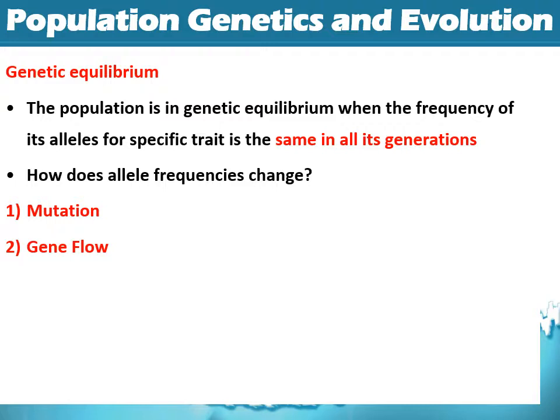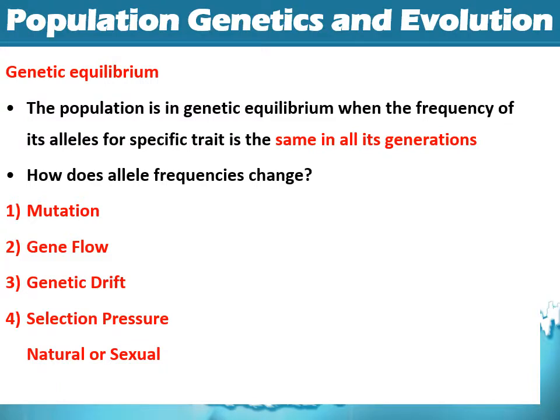The main causes of allele frequency change are: mutation — probably the easiest and most common way allele frequencies end up changing; gene flow — genes coming in and out of a population; genetic drift — the random removal of alleles, maybe not because of selection but because of random death in the population; and selection pressure — the process of natural selection or even artificial selection causing allele frequencies to change. That being natural, sexual, or artificial selection.